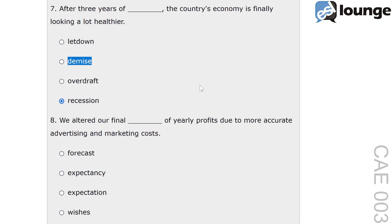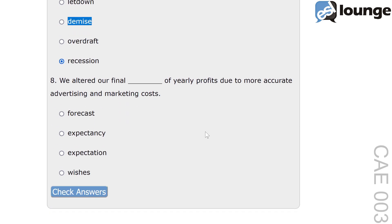And now, finally, question 8. We altered our final blank of yearly profits due to more accurate advertising and marketing costs. The options are forecast, expectancy, expectation and wishes. The correct answer is forecast. Forecast means a prediction or estimate of future events. For example, the weather forecast predicts rain — this indicates an estimate of future weather. In this context, forecast refers to the prediction of yearly profits.